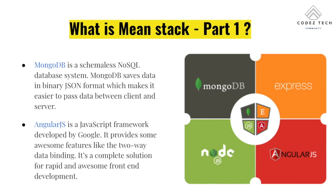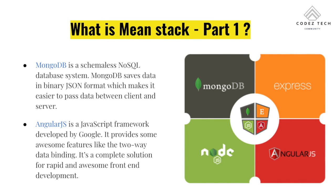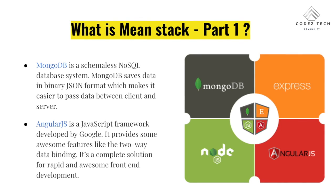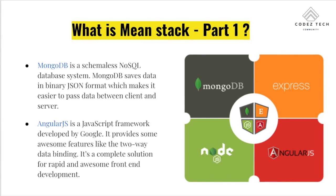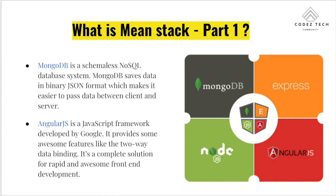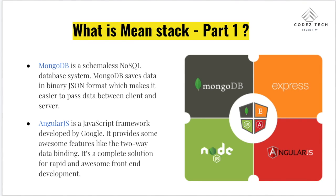MongoDB is a schema-less NoSQL database system. MongoDB saves data in binary JSON format, which makes it easier to pass data between client and server. If you haven't watched my MongoDB tutorial, please go and watch it — it's a complete playlist and you can find the details in the description box below.